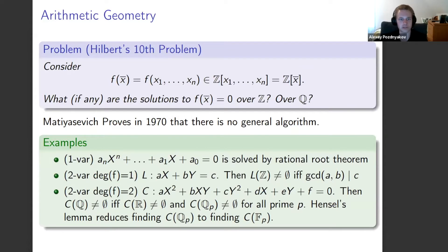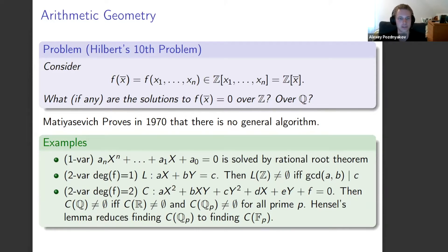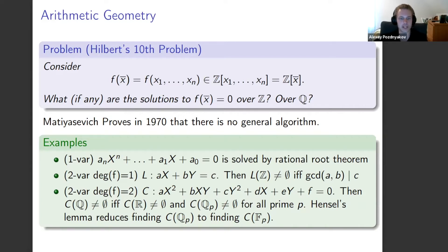I want to begin with arithmetic geometry, the area of math concerned with equations with integer coefficients, or Diophantine equations. These equations have been studied for thousands of years and there's still quite a lot that's not known about them. A central problem is Hilbert's 10th problem: given a polynomial f(x) in n variables with integer coefficients, do any solutions to f(x) = 0 exist over the integers or rationals? This is extremely difficult — in fact, proved in 1970 by Matiyasevich that no algorithm at all can solve it in full generality.